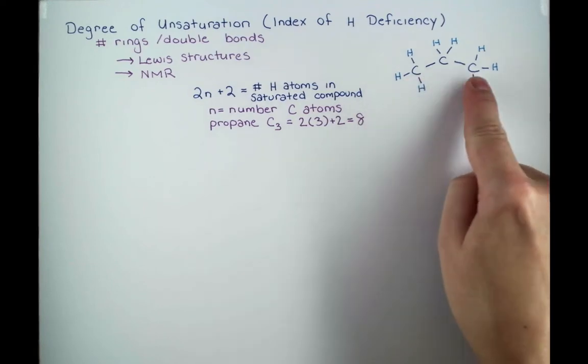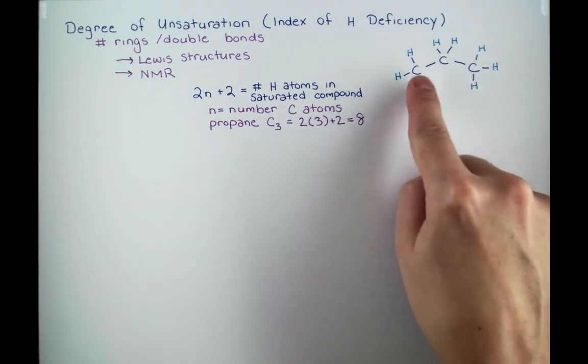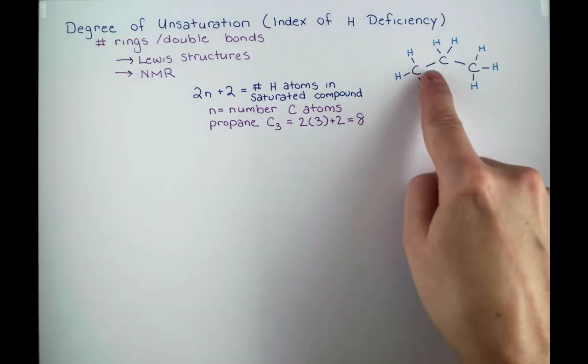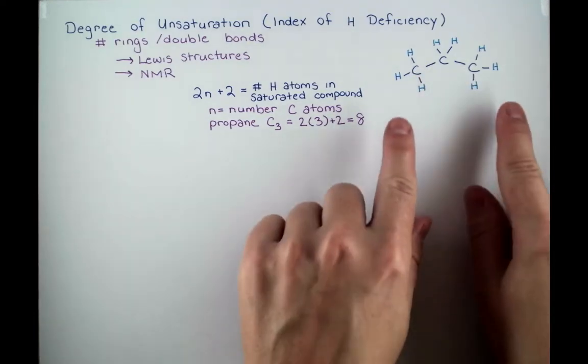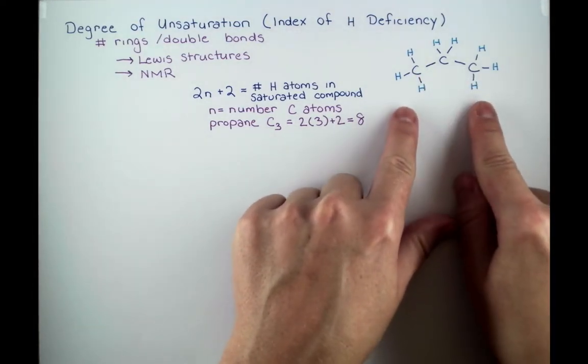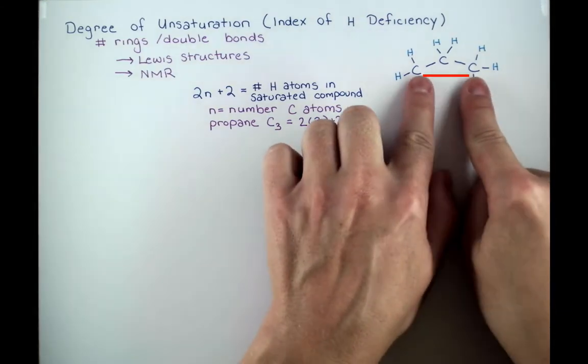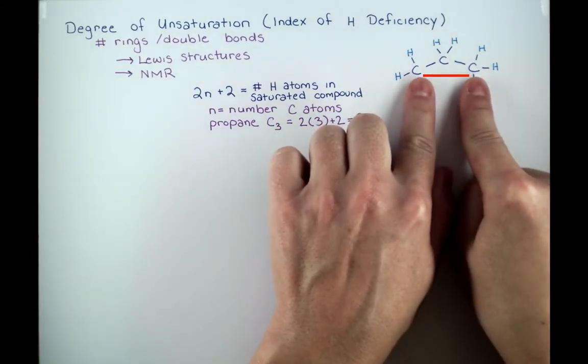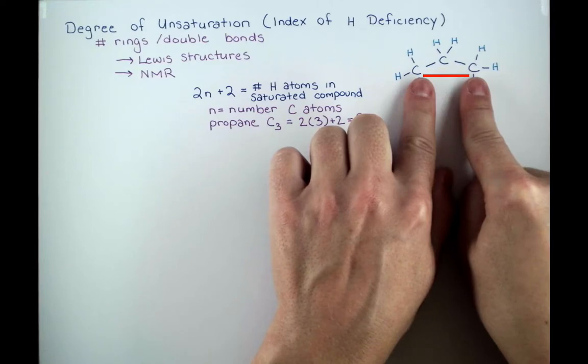Now imagine we bonded each of these end carbon atoms into a ring. Well, when they're bonded, they'll have an extra bond already. In order to avoid making 5 bonds to carbon, we have to lose one of the hydrogen atoms from each carbon. So the number of H atoms in the formula containing a ring is 2 less than the saturated compound.